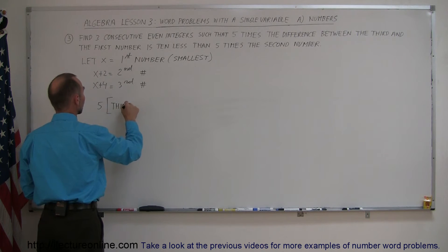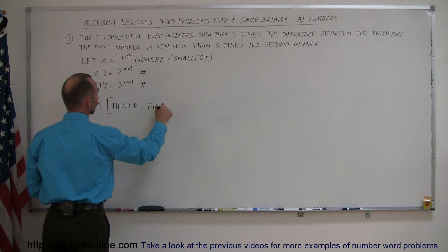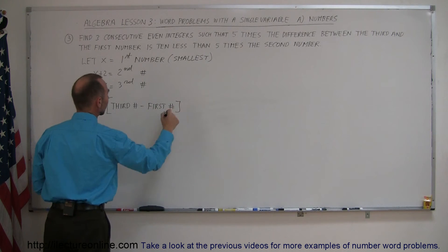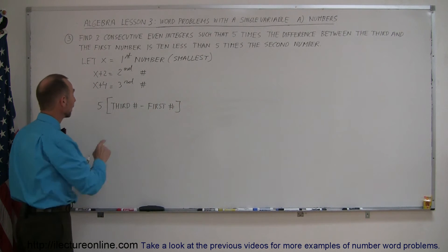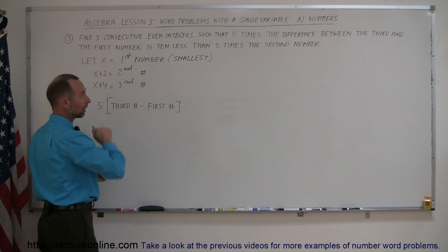So that's the third number minus the first number. So let's see if we got this right. So it's 5 times the difference between the third number and the first number. So we get that right.